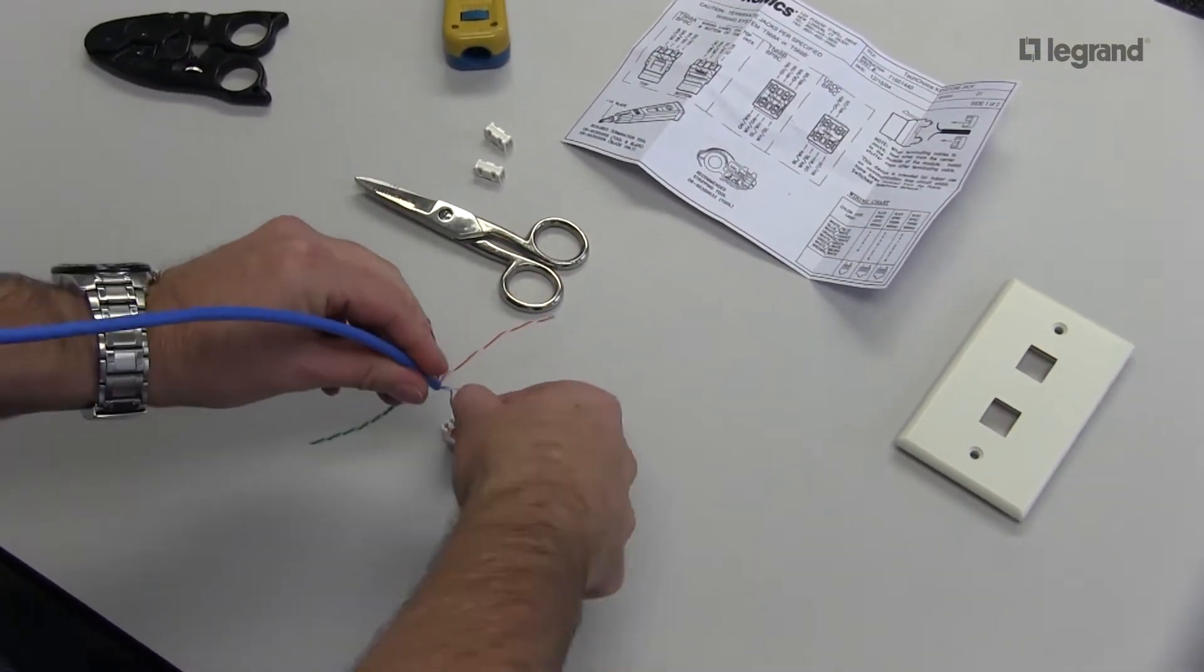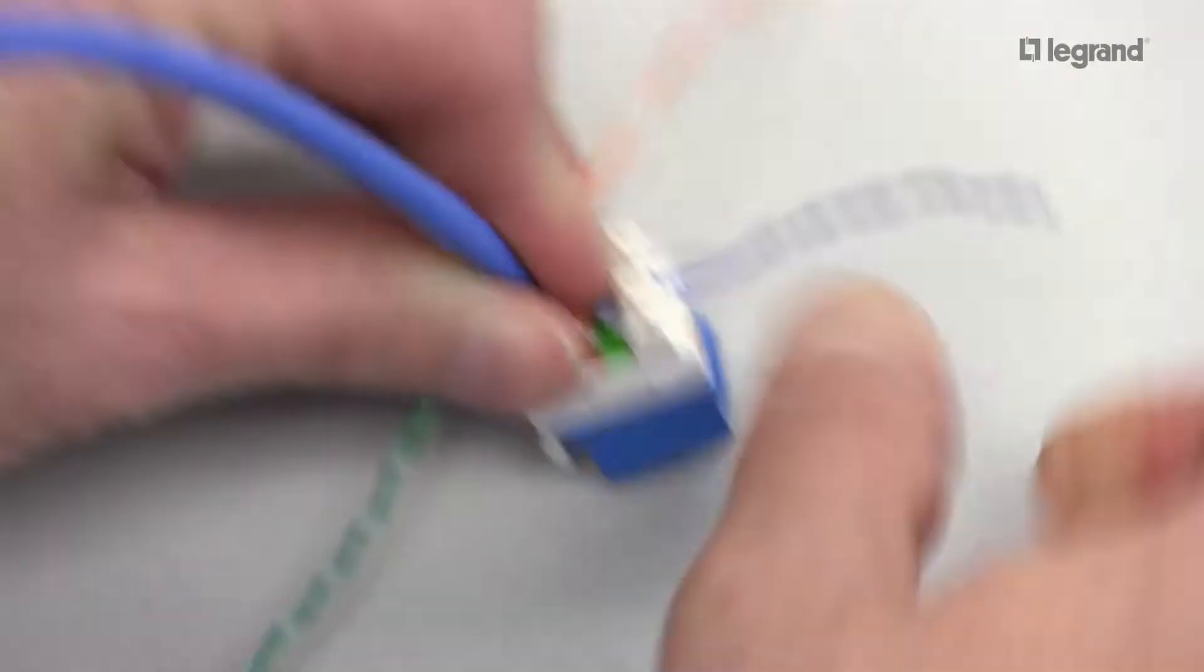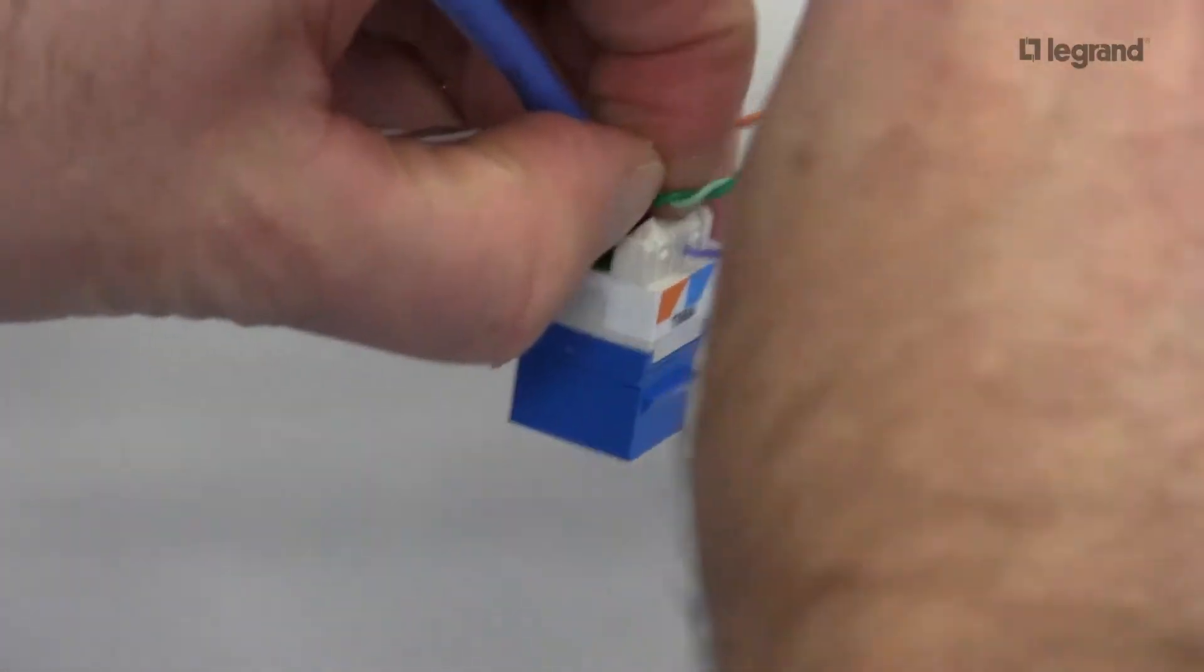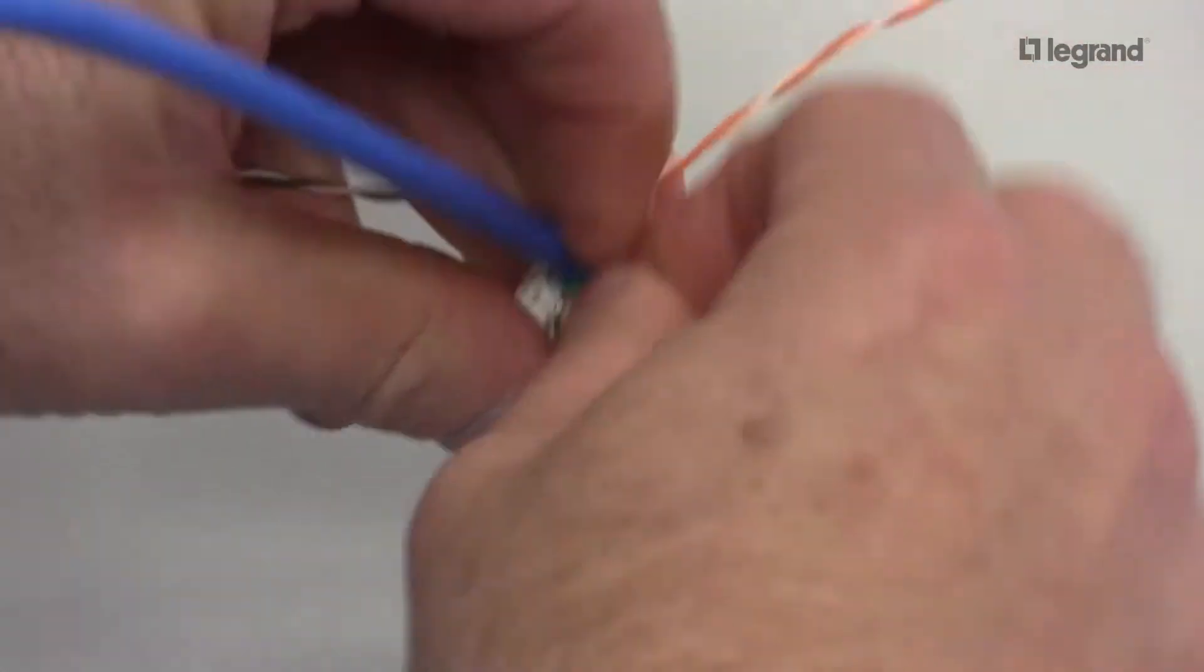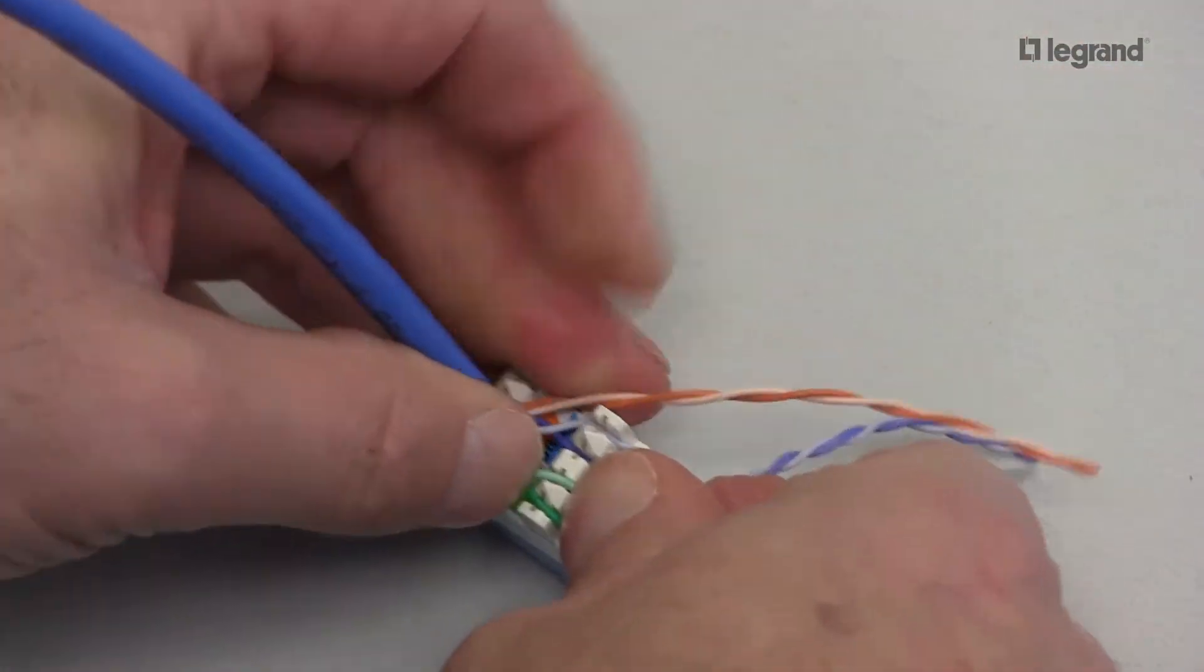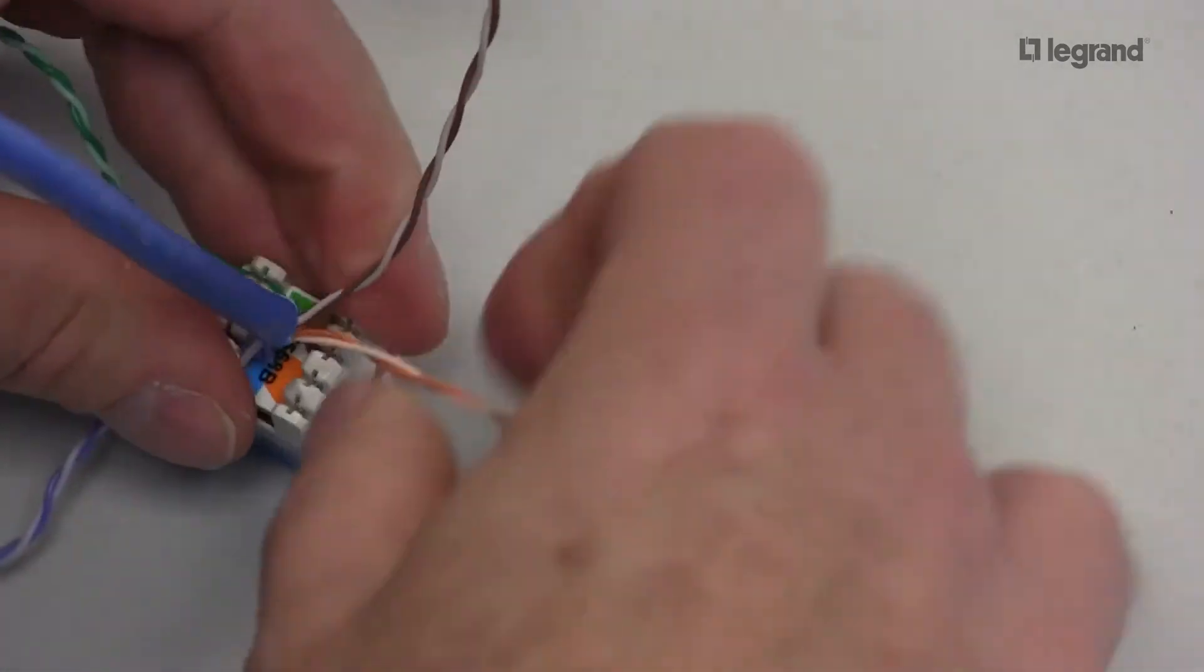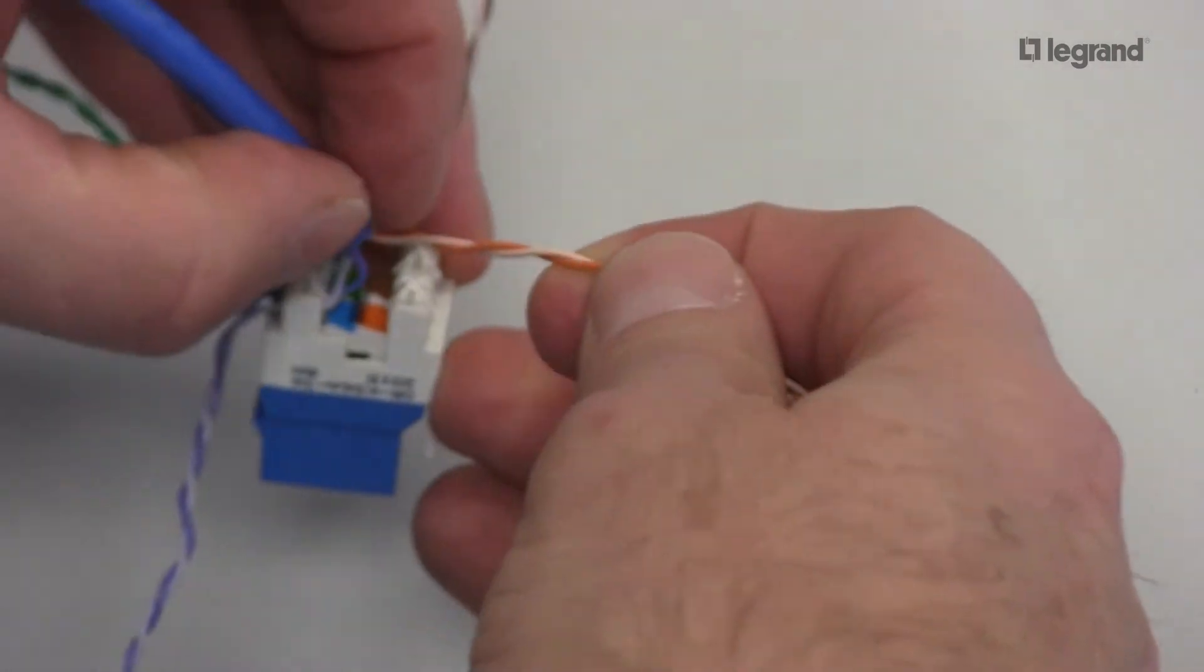Now remember, I'm going by the B on the inside, so I'll separate my white-blue, and I'll separate my white-green. And rotate over to the other side, and we'll separate our white-orange.